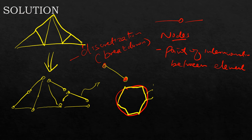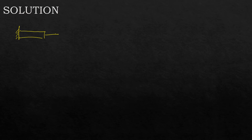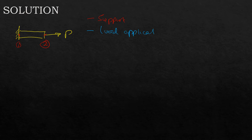We have seen what a node is — now which criteria do we use in defining our nodes? Let's take a simple example of a bar fixed on one end with a load P applied at the other. Naturally we describe this with one element: node one here and node two here. One key criterion for locating a node is at the support — that is one of the criteria. The second criterion is at the point of load application.